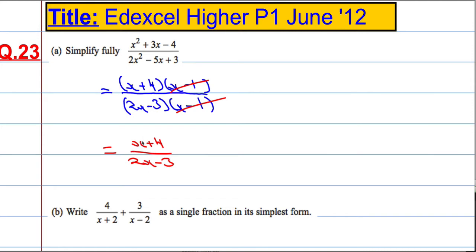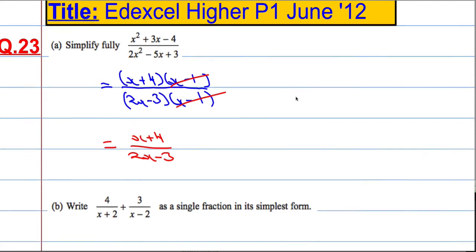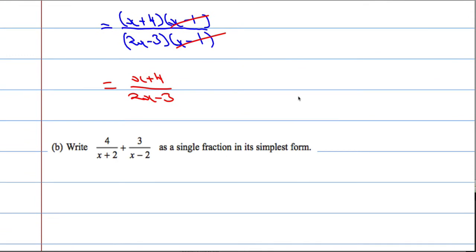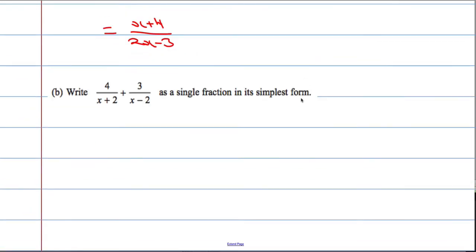Okay, do not, you can't cancel out the x's here. It doesn't work. Okay, second part. Write 4 over x plus 2 plus 3 over x minus 2 as a single fraction in its simplest form.